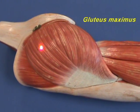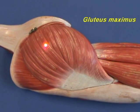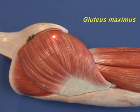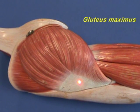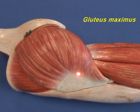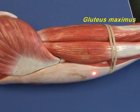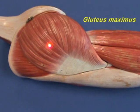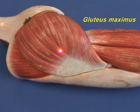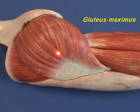It has an origin on the ilium behind the posterior gluteal line, the dorsal surface of the sacrum, and the lateral margin of the coccyx. It inserts on the gluteal tuberosity of the femur and also on the posterior aspect of the iliotibial tract. The gluteus maximus is a powerful extensor of the flexed femur at the hip joint and it laterally rotates the femur at the hip joint.